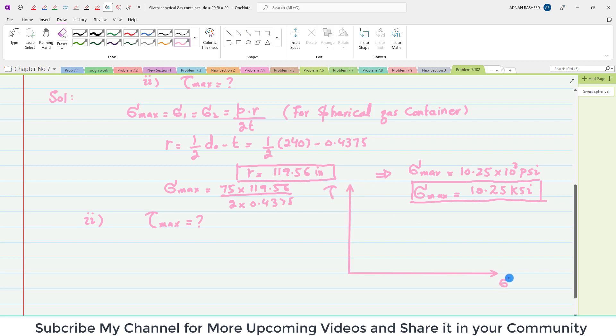On the horizontal axis you have the principal stress. Now, this sigma max equals sigma 1 and sigma 2. I will write sigma 1 equals sigma 2 equals 10.25 ksi. And here the applied shear stress equals zero.